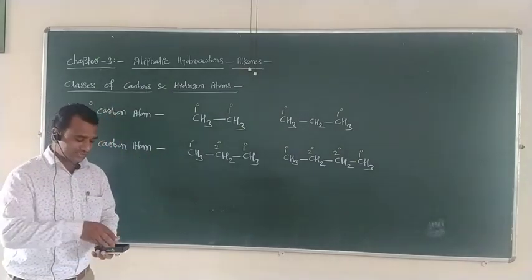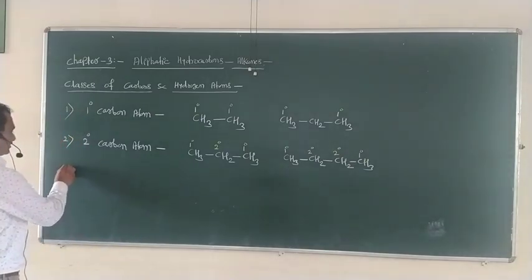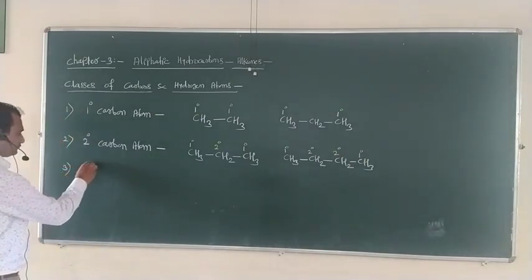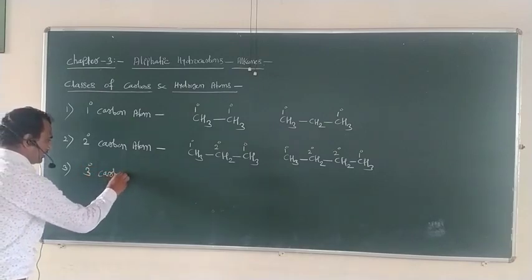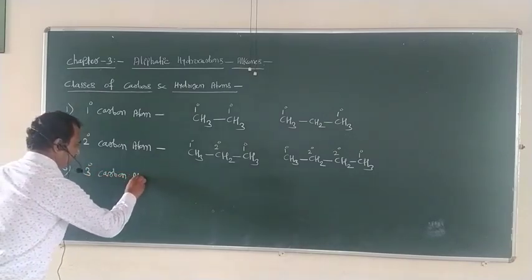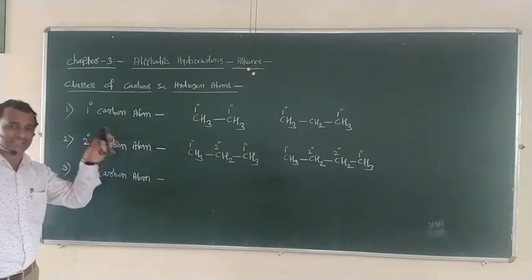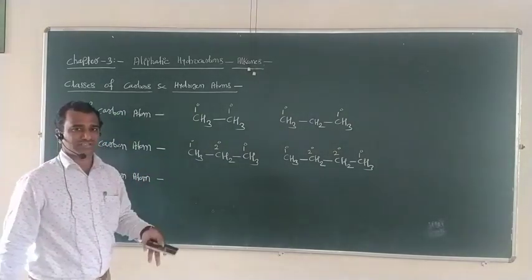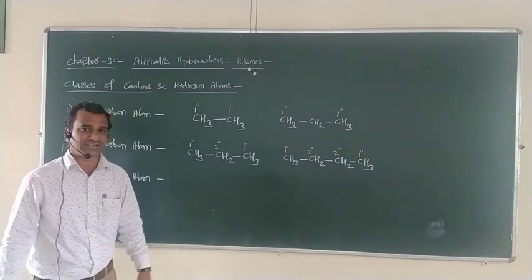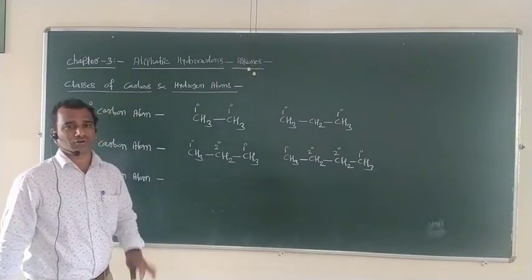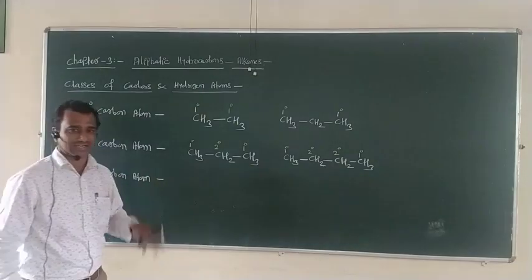The last class of carbons is called the tertiary carbon atom. The carbon atom which is attached to three other carbon atoms is called the tertiary carbon atom. In a similar way to primary and secondary carbons, we now study what a tertiary carbon is: it is a carbon attached to three more other carbon atoms.